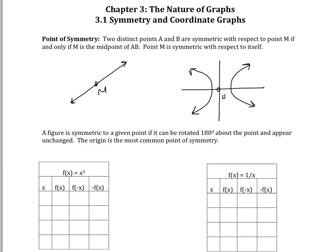Chapter 3 is on the nature of graphs, and the first section is talking about symmetry. A point of symmetry: two distinct points A and B are symmetric with respect to point M if and only if M is the midpoint of AB. Point M is symmetric with respect to itself.